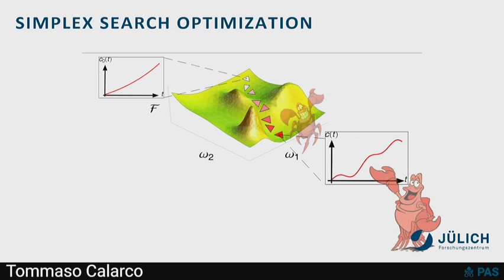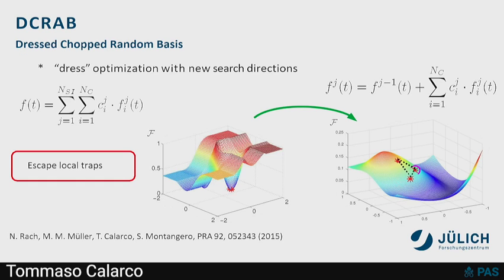You can do that with a simplex method, where a polytope runs down the hill. This has several advantages: you don't need an analytic description or a gradient, you can put it in a closed loop, and you can see this as a pulse shape corresponding to what is feasible in an experiment. There will be local minima — a typical problem — but since the shape of the landscape depends on your function space, if you get stuck in a local minimum, you can throw away one of your basis functions, the landscape changes, and you can escape local traps.